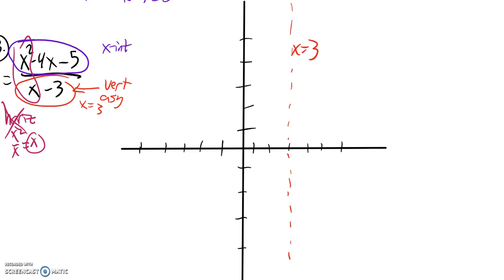I could run it through quadratic formula. I could factor it. So it looks like it happens at 5 and negative 1.